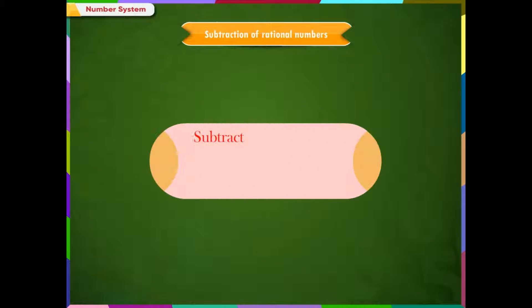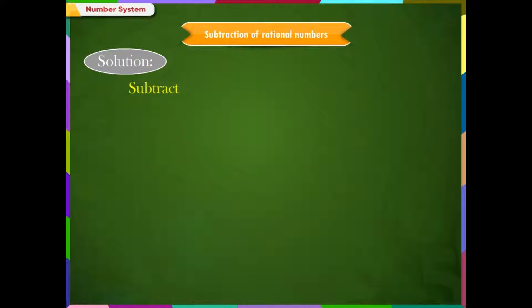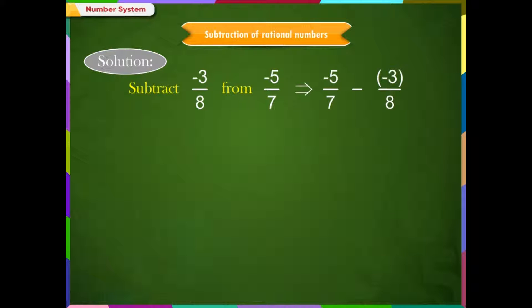Let us understand the concept with one more example. Example 2: Subtract minus 3/8 from minus 5/7. Solution: Subtracting minus 3/8 from minus 5/7 is equal to minus 5/7 minus (minus 3/8).